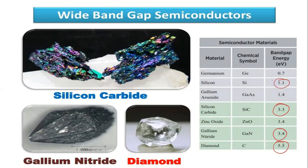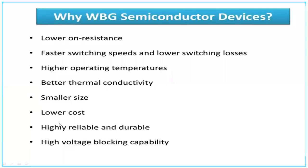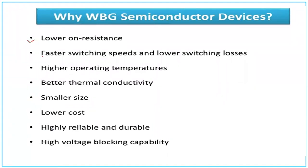These are examples of wide band gap devices — WBG. Key advantages, important from an examination point of view: lower on-resistance, faster switching speeds, lower switching losses, high operating temperature, better thermal conductivity, smaller in size for the same breakdown voltage, lower cost (excluding diamond), highly reliable and durable, and high voltage blocking capability.